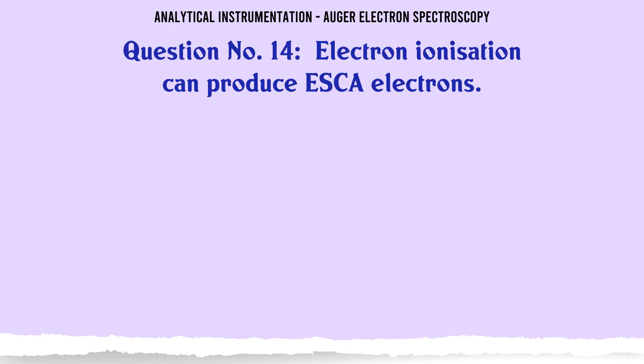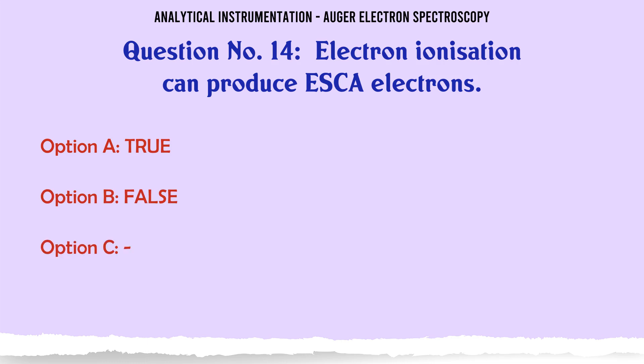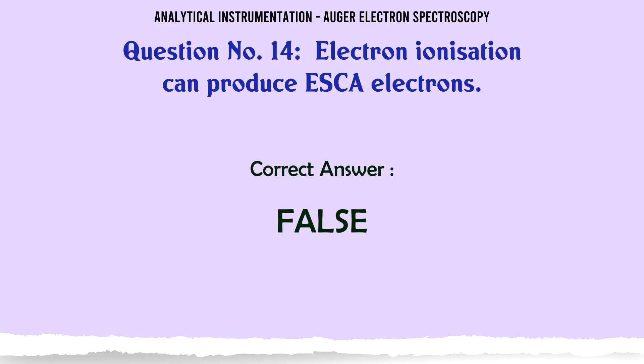Electron ionization can produce ESCA electrons. A. True. B. False. The correct answer is False.